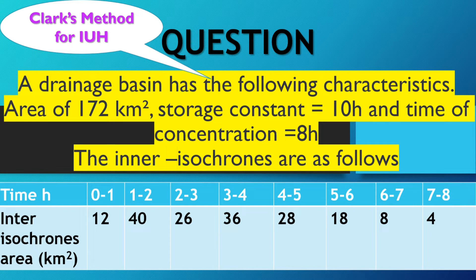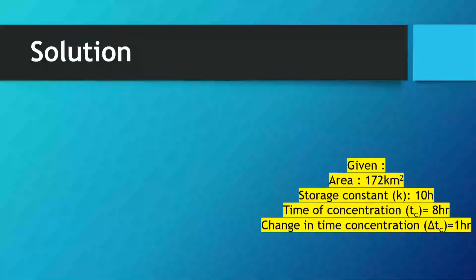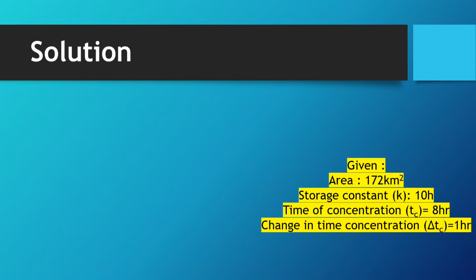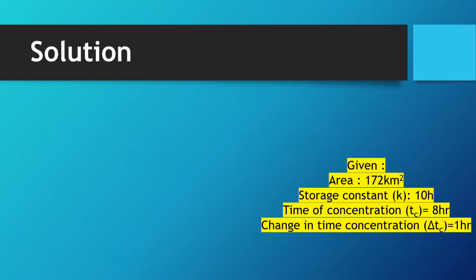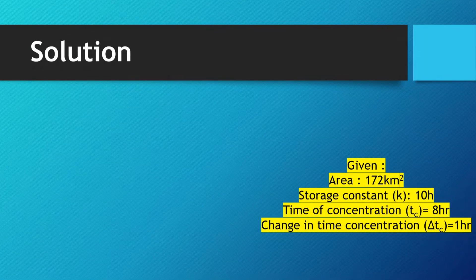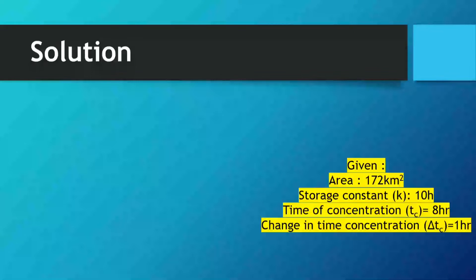Now let's move to the solution section. First of all, we have the given data: area 172 km², storage constant K equals 10 hours, time of concentration Tc equals 8 hours, and change in time concentration ΔTc equals 1 hour.